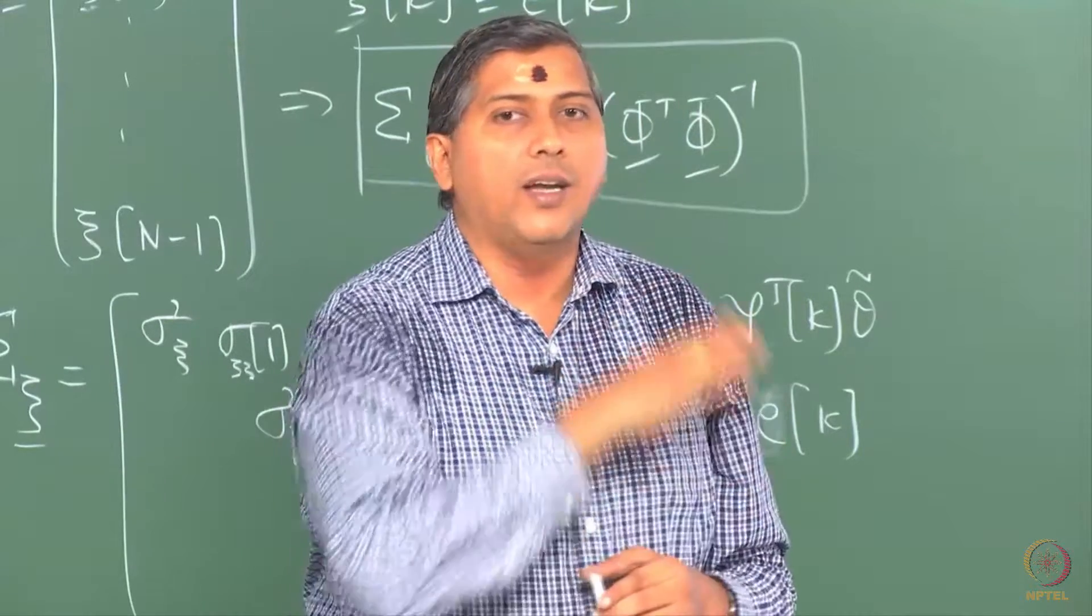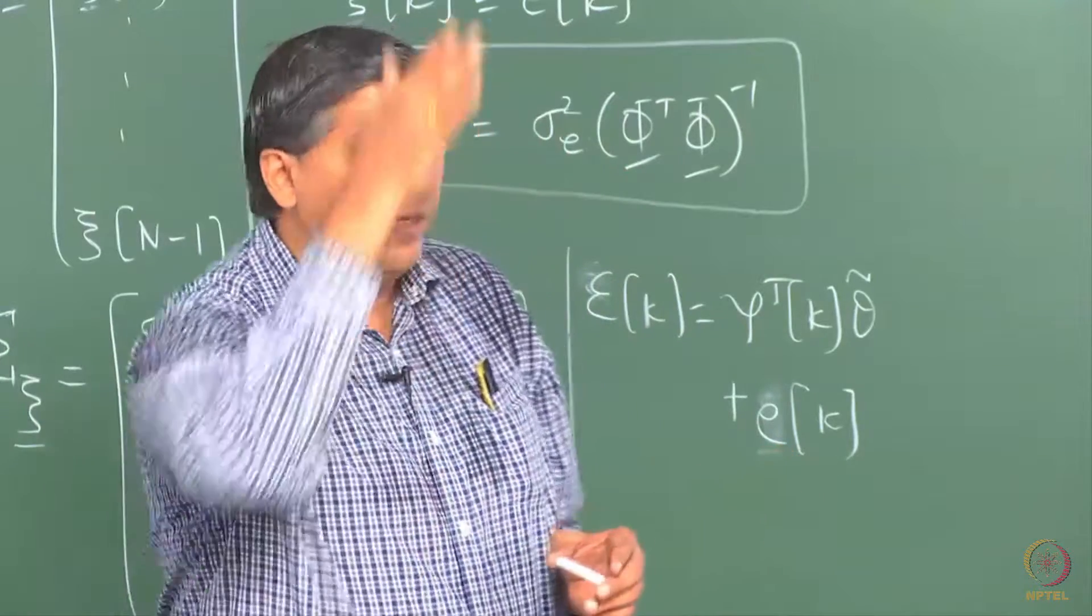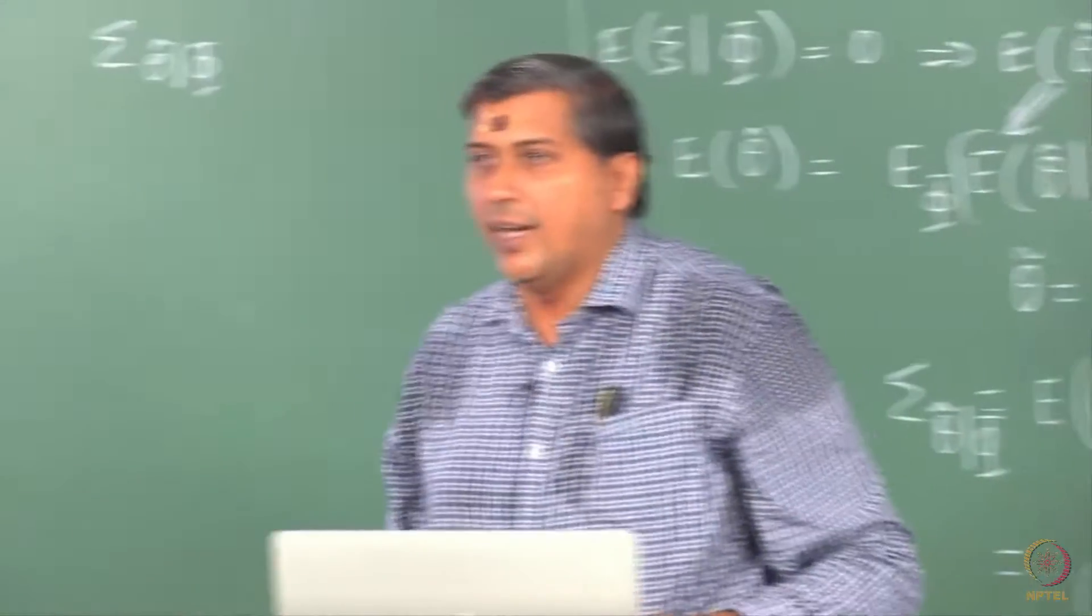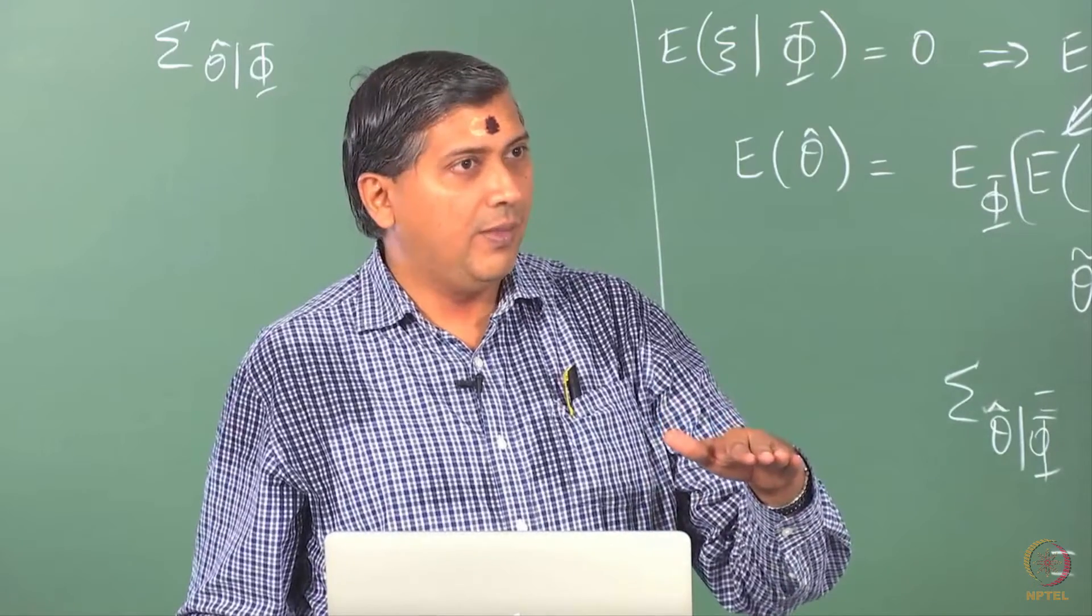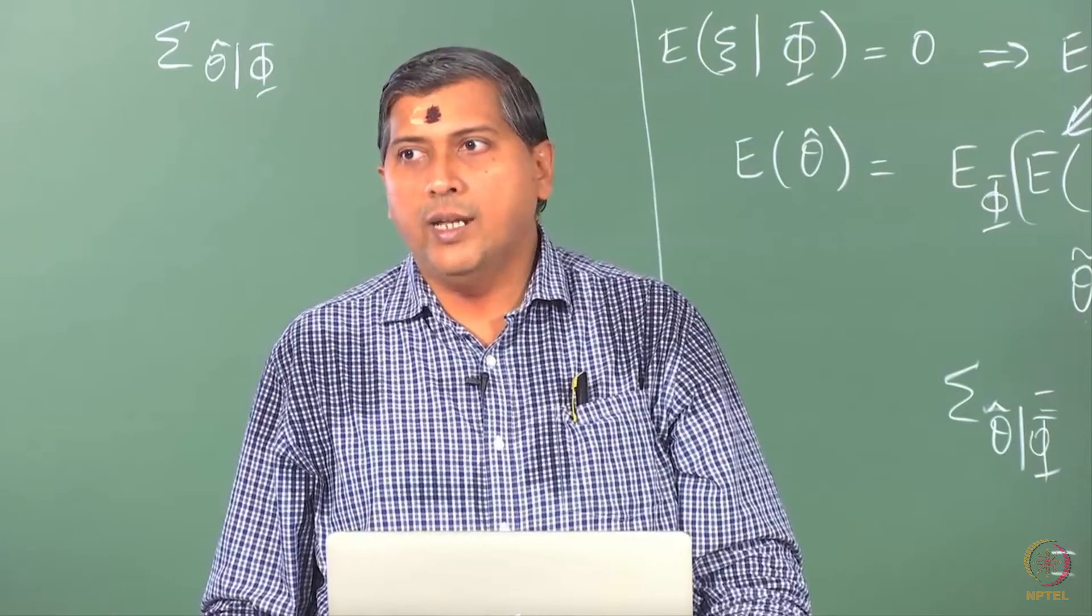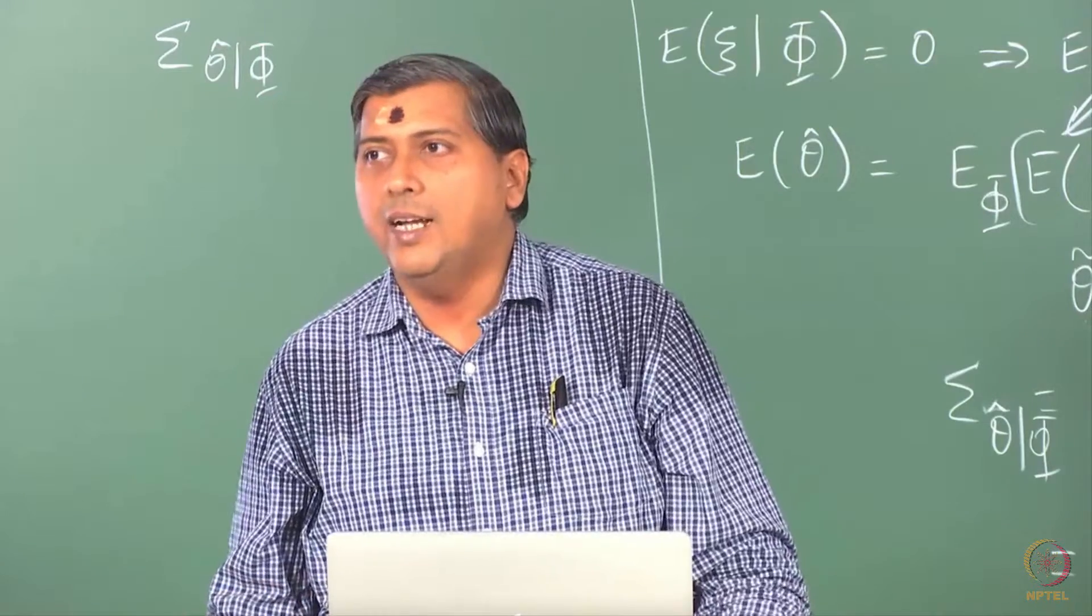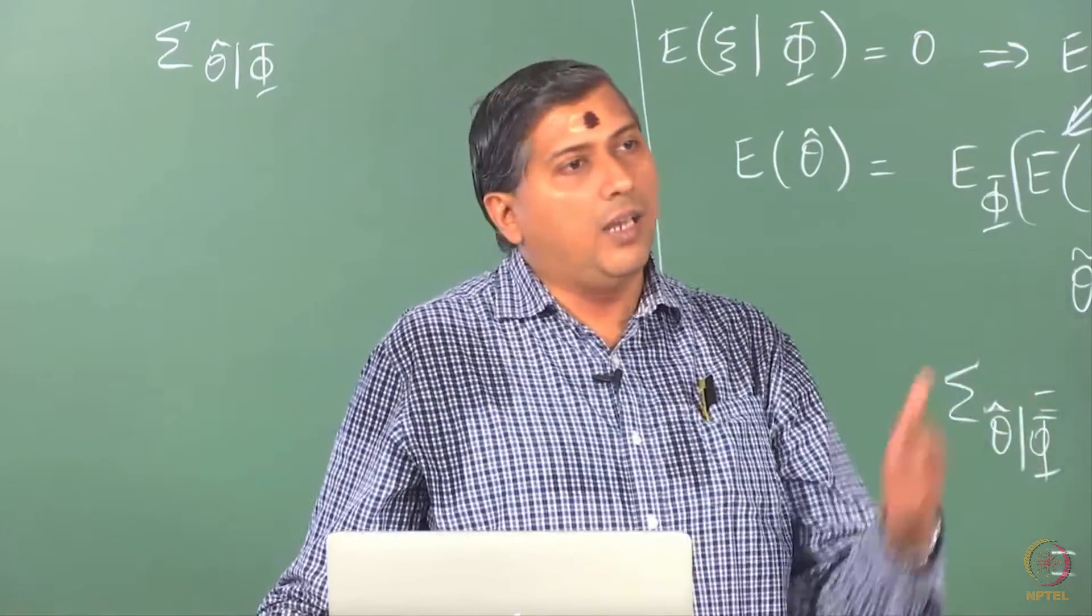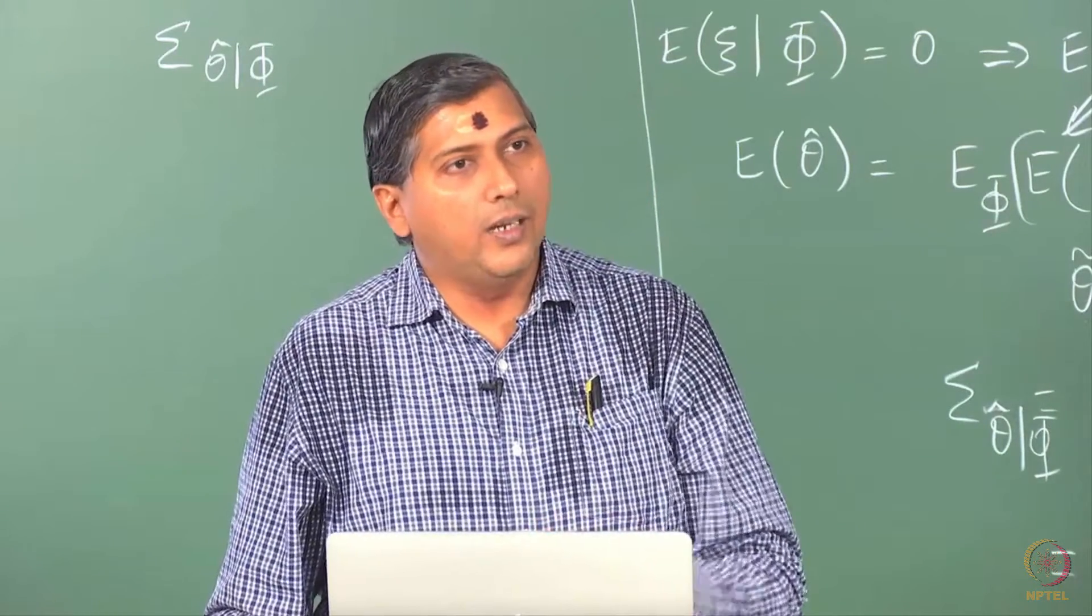You may not in practice run into perfectly linearly related regressors. That means any pair of columns of phi may not be perfectly linearly related, but even if they are close, then the condition number shoots up and you have an issue. So collinearity does not mean necessarily, theoretically it means perfect linear relation. Practically it means nearly linearly related. In such cases there are remedies which we do not discuss. It is outside the scope of this course, but there are remedies available.